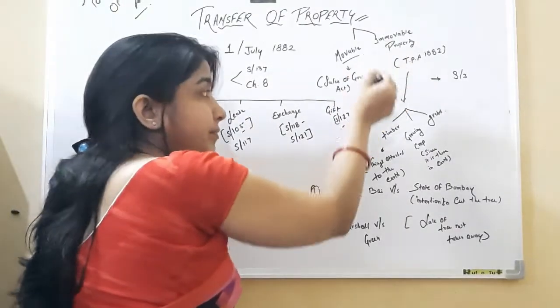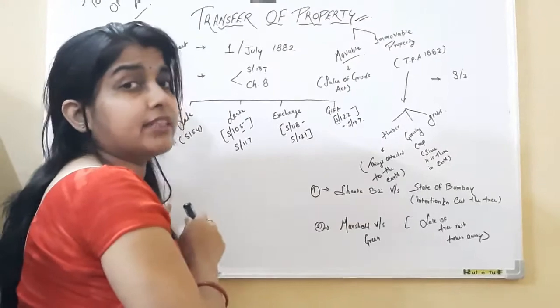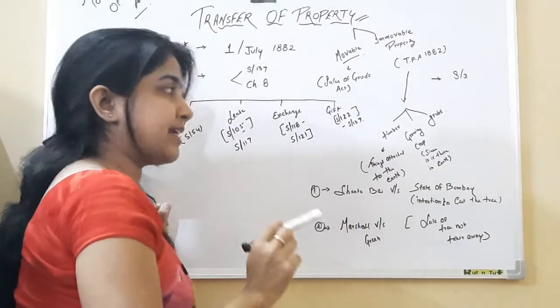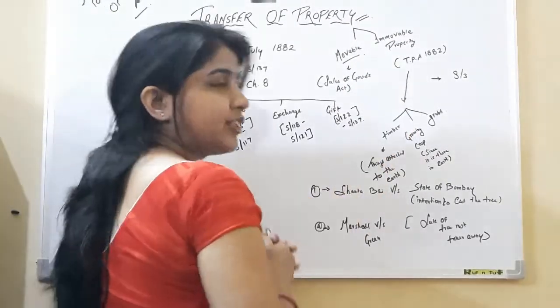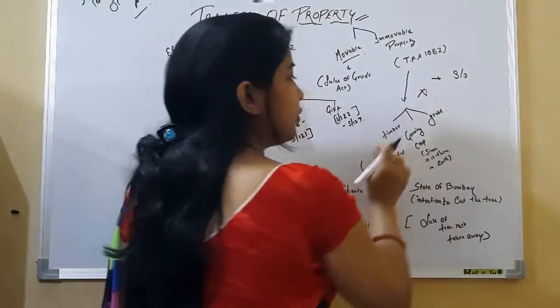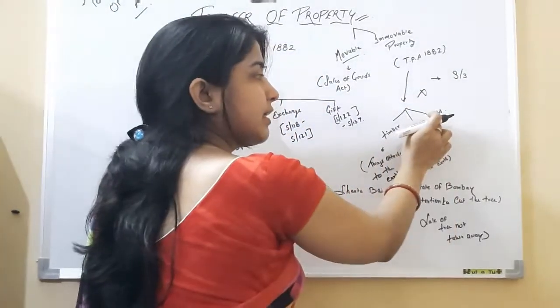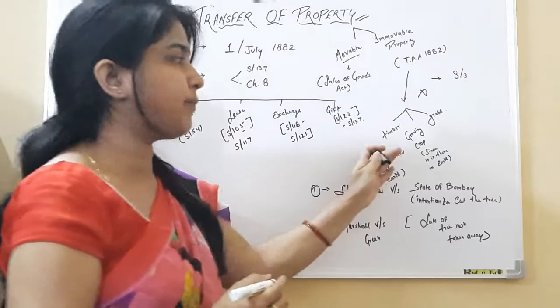Under this, the definition of immovable property is given under section 3 and says there it does not include timber, growing crops, and grass.